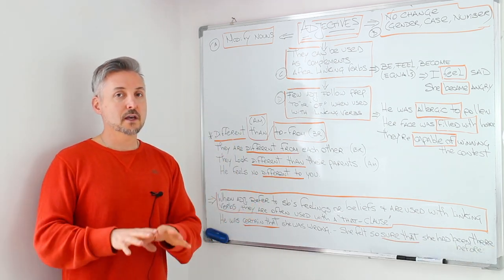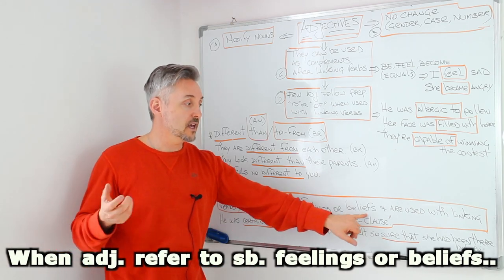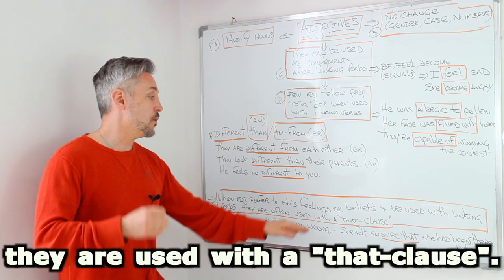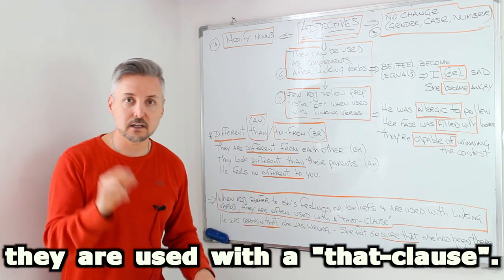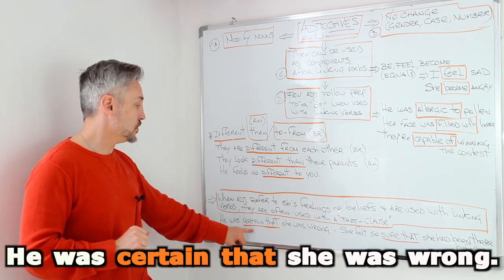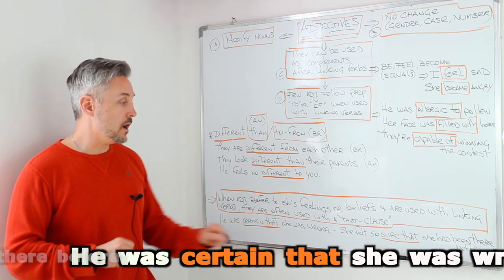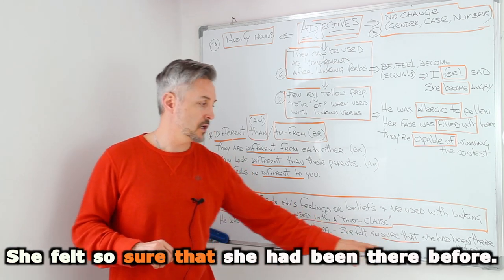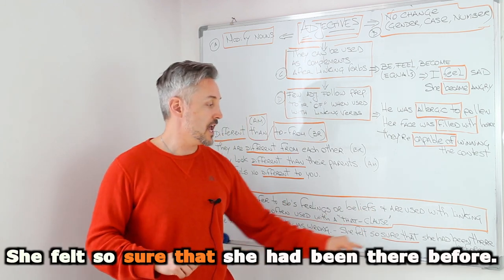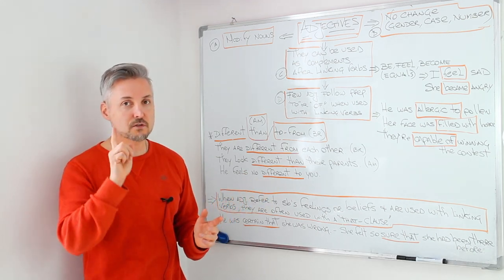Now, there is another point that I want to talk about using linking verbs. And that is when adjectives refer to somebody's feelings or beliefs and are used with linking verbs, like I said before. They are often used with a that clause. So I got two examples here. He was certain that she was wrong. So certain is the adjective. And then the that clause that she was wrong. Or she felt so sure that she had been there before. So that she had been there before is the that clause. And then sure is the adjective.